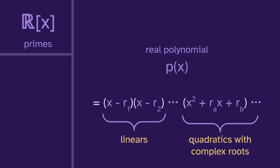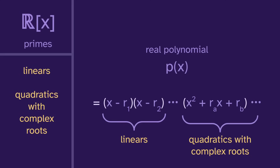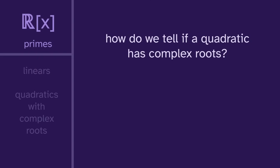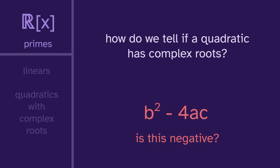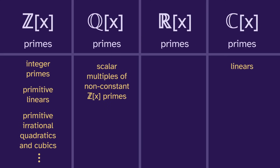So the real polynomial primes are the linears and the irreducible quadratics — those with complex roots. If a polynomial is not one of these types, it must have a factorization into them. To tell if a quadratic has complex roots, we use the quadratic formula and check if the discriminant b² minus 4ac is negative — that's what gives us a complex root. So we label those types as primes.